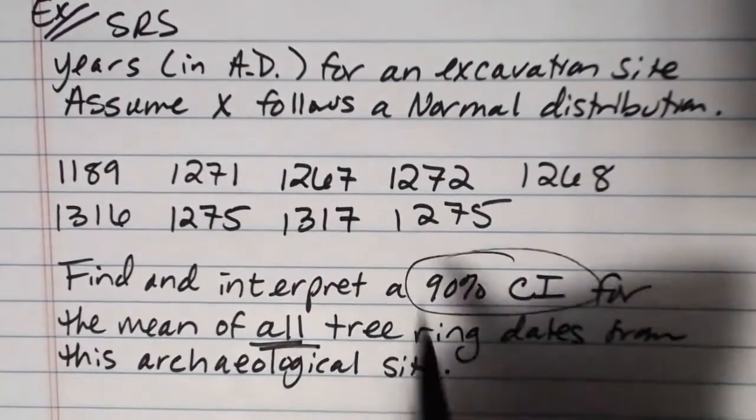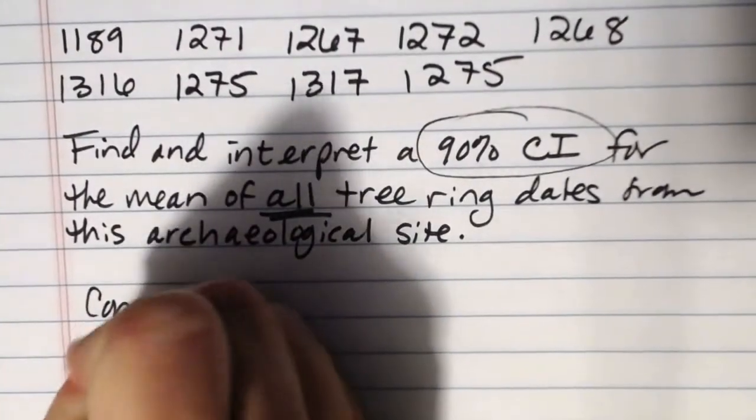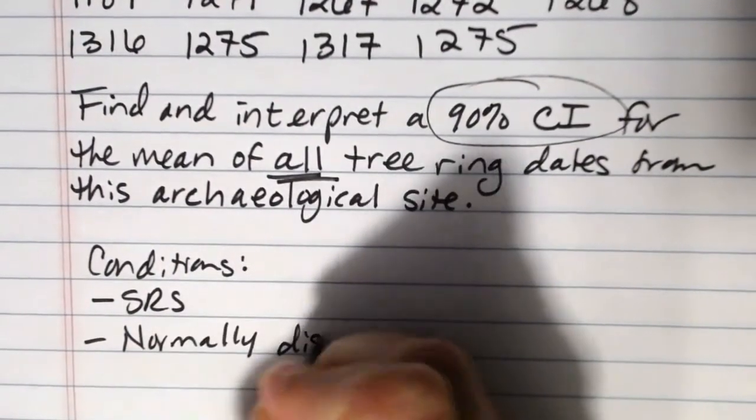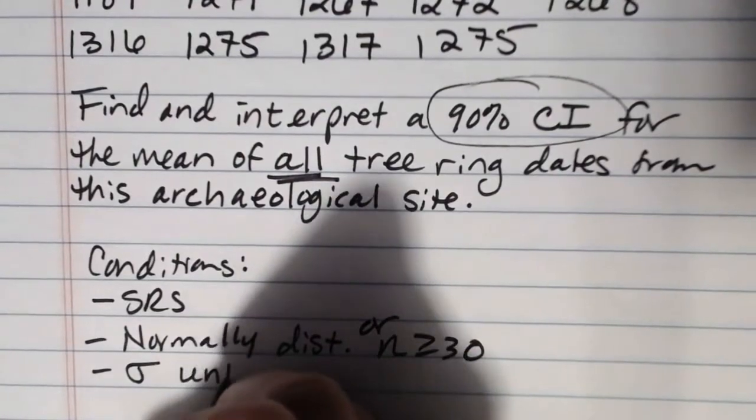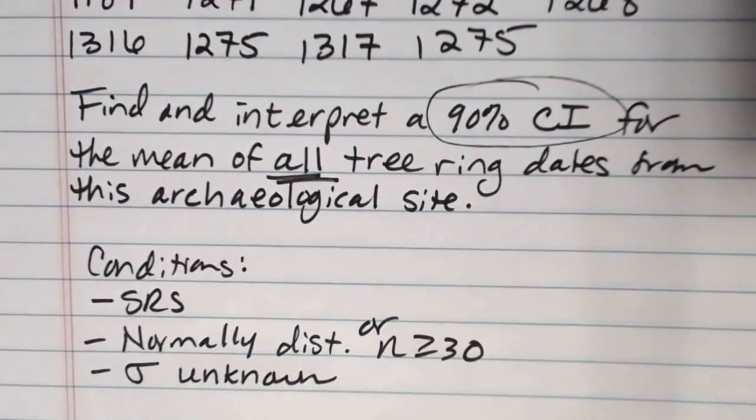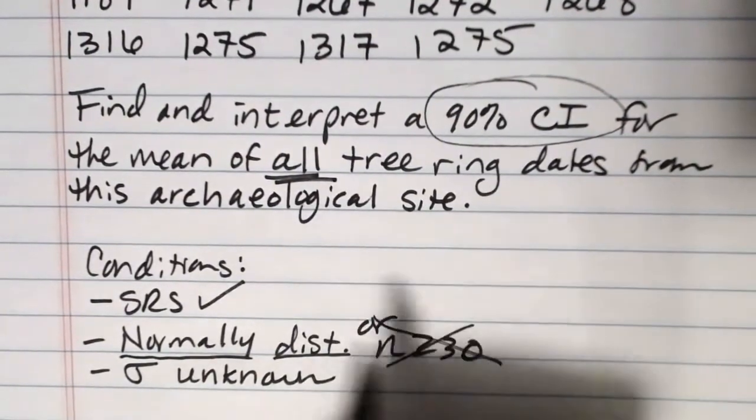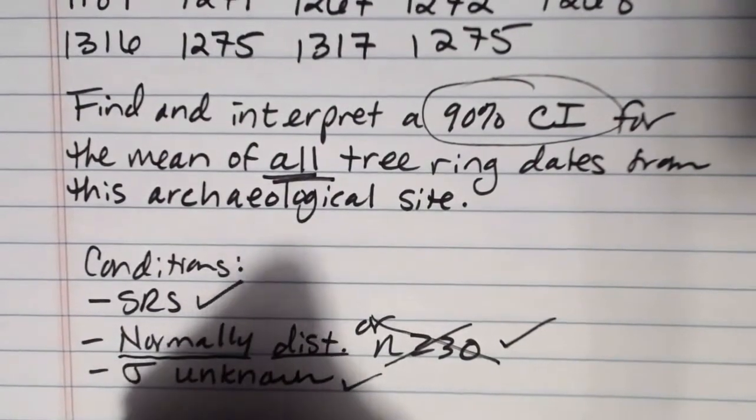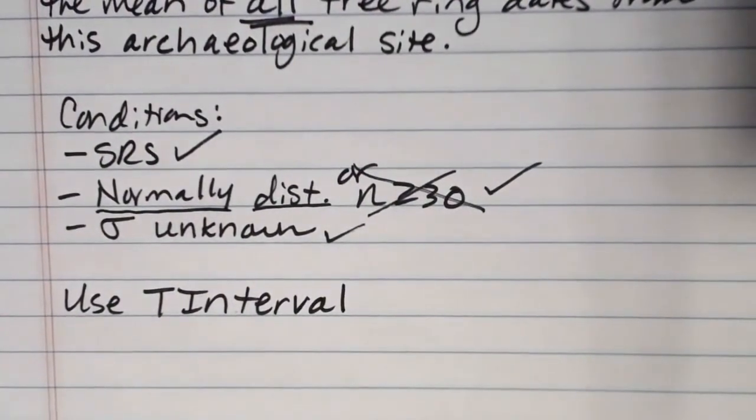So, we can see we're calculating a confidence interval, and we have our confidence level there. The first thing that we need to do is we need to check our conditions for inference. And again, those were, did we have a simple random sample? Did it say something about normally distributed or mound-shaped and symmetric? Or n greater than equal to 30? And then also, to use the method that we're talking about today, sigma needs to be unknown. We did have a simple random sample. It's said to assume that the tree ring dates were normally distributed, which is good because we didn't have a big enough sample size. But since this is an or, being normally distributed is good enough. And then here the sigma was unknown. So because all of our conditions are met, we can use the T interval in the calculator to calculate the estimate for our mean, population mean tree ring date.